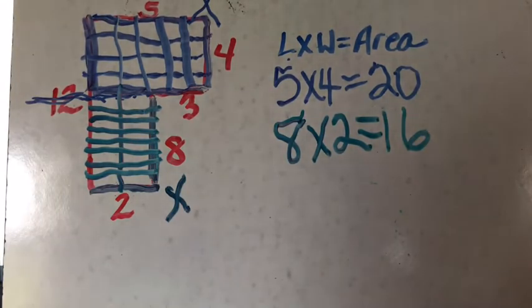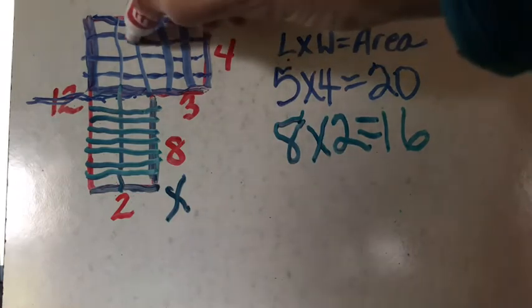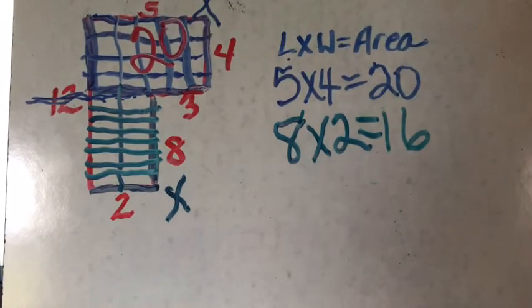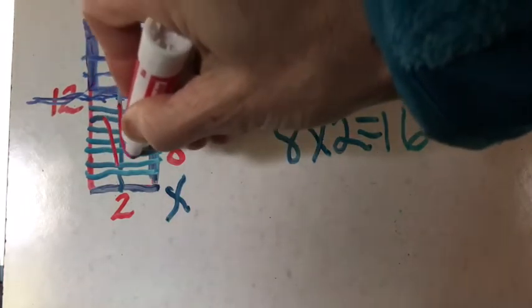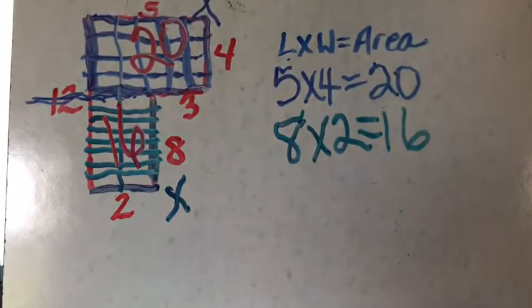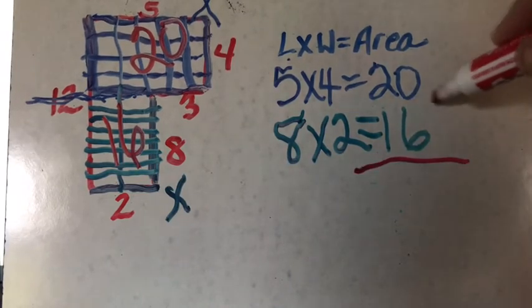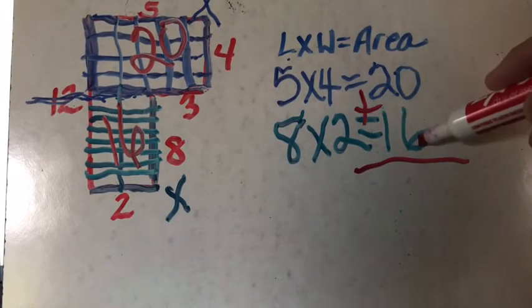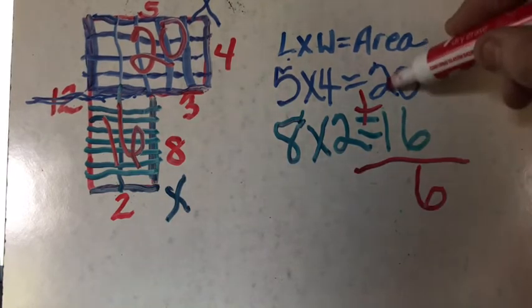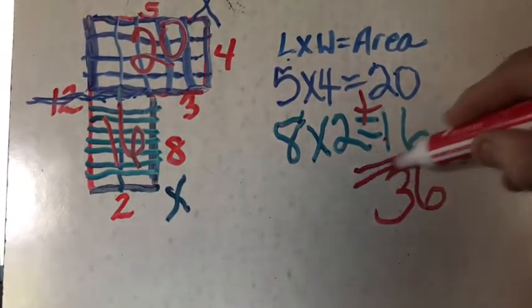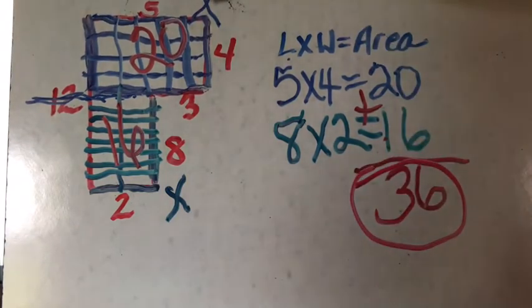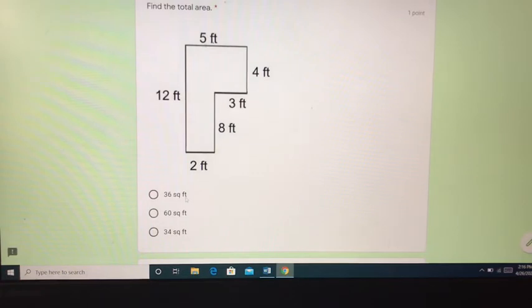So now I have the top area equals 20. Five times four equals 20. The bottom area equals 16, eight times two, eight times two, or two times eight. Now I just need to add these together to get the total area. Zero plus six is six. Two plus one is three. So the total area for this whole object is 36 square units. Let's see. Square feet. They're dealing in feet. So our unit is feet. So 36 square feet is your final answer.